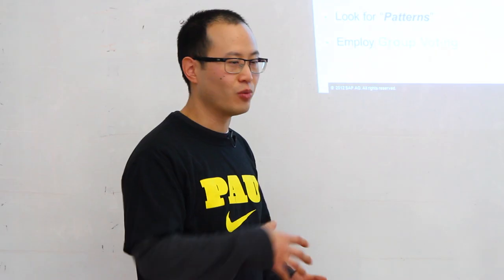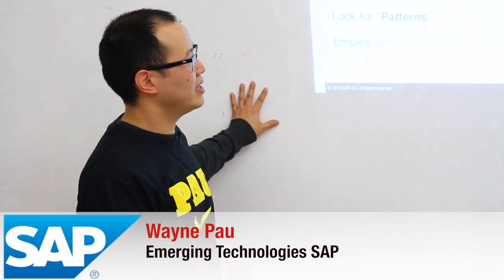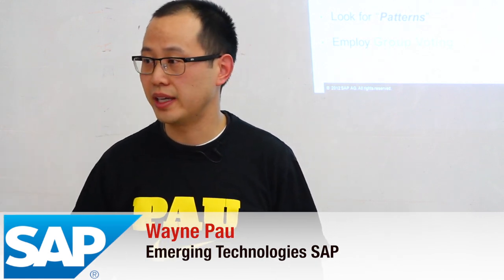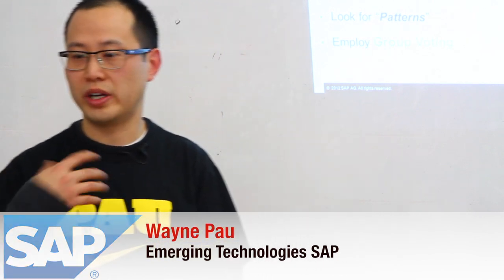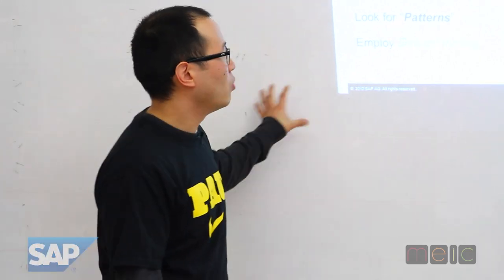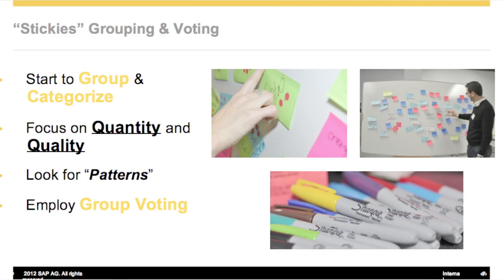I'm going to tell you the process and hopefully show it. The idea is you basically talk in a group. We'll give everybody a sticky note and a sharpie — the idea is to brainstorm, writing one idea at a time on each one so that we can group them. We'll put them all on the board the first time, have somebody facilitate it — probably myself — and then we'll start to group and categorize. We want to focus on both quantity and quality when we do the grouping, and we'll look for patterns.